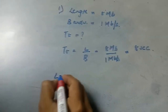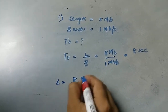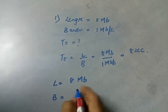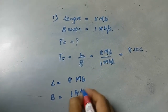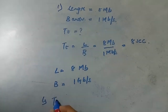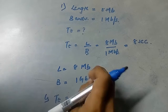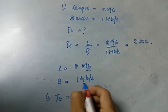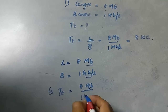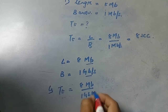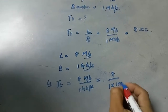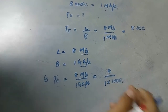Now, given length equals 8 MB again but bandwidth equals 1 GB per second, what will be the transmission delay? First we need to convert to the same unit: 8 MB divided by 1 GBPS, which becomes 8 divided by 1 into 1000.